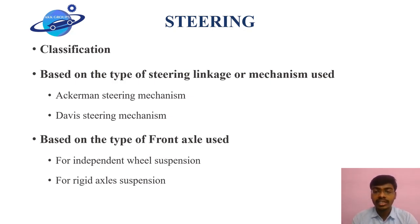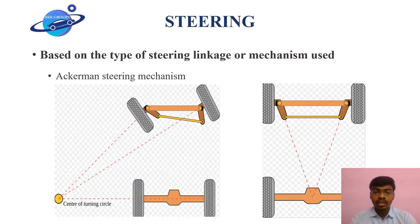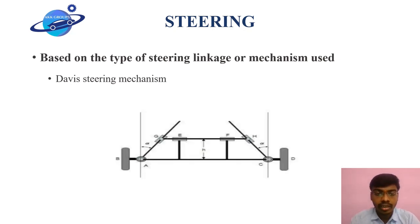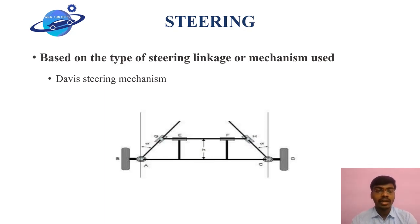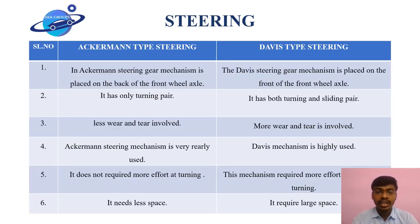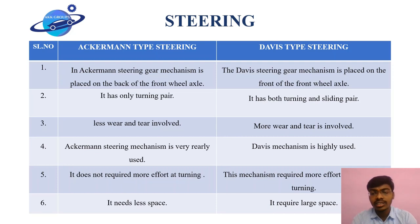Let's have a clear look at Ackerman and Davis steering mechanisms. In the Ackerman steering mechanism, the entire steering mechanism is placed at the back side of the front axle. In the Davis steering mechanism, the entire steering mechanism is placed at the front side of the front axle.